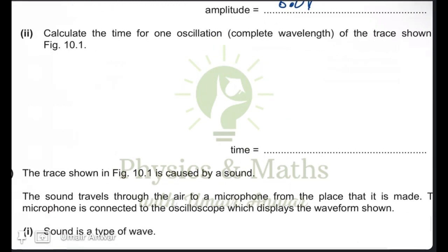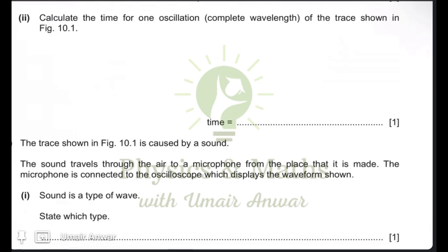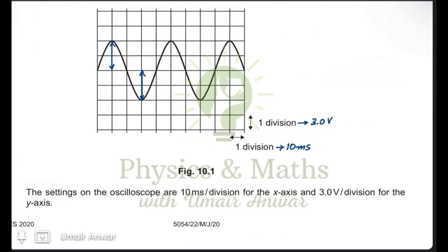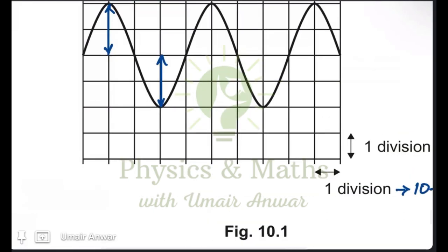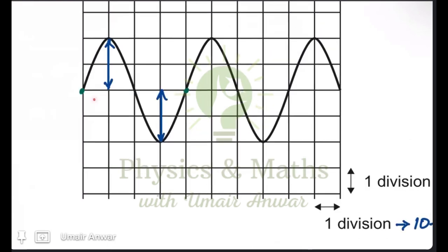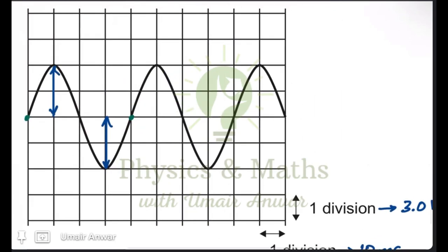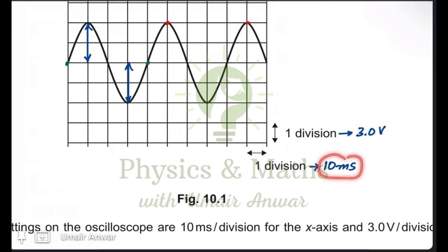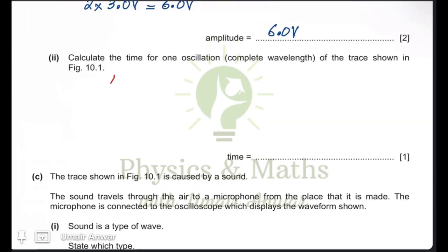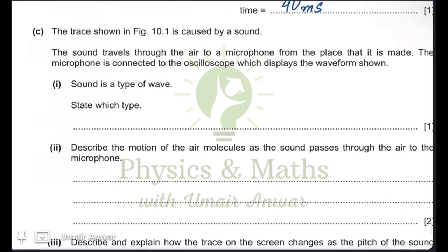To calculate the time for one complete oscillation, we identify the wavelength on the trace. Measuring from one point to the equivalent point on the next wave, there are four divisions. Measuring from crest to crest also gives four divisions. Since one division represents 10 milliseconds, the time period is 4 × 10 milliseconds = 40 milliseconds. In this time, one complete wave is formed.